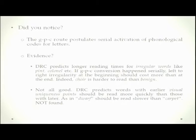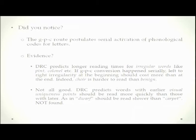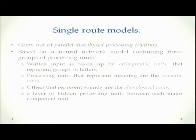However, the DRC does not apply uniformly across all cases. For some cases, the DRC predicts that words with earlier visual uniqueness points, like 'dwarf', should be read more slowly than words like 'carpet', but this has not been found — 'dwarf' is read as fast as 'carpet'. So there are some contradictory pieces of evidence, and this is an ongoing area of research.